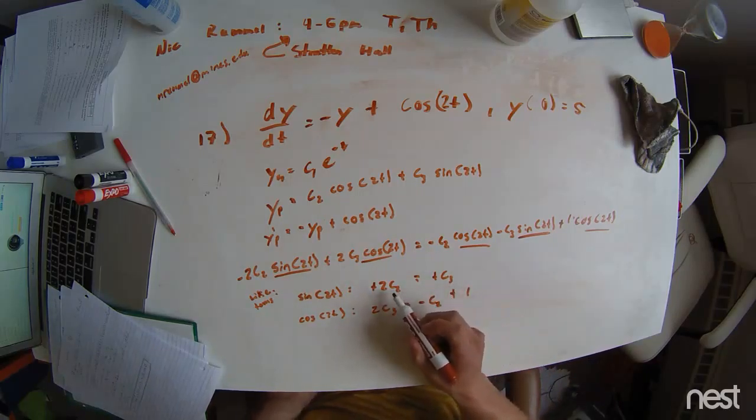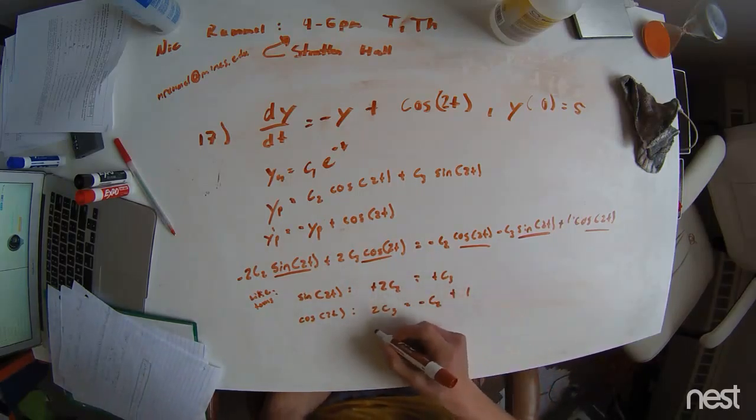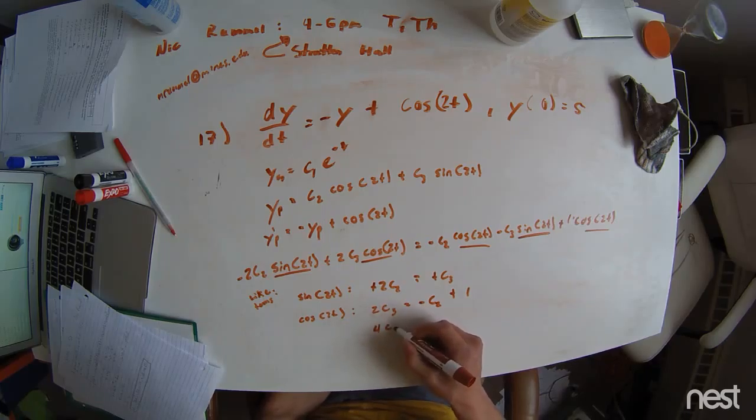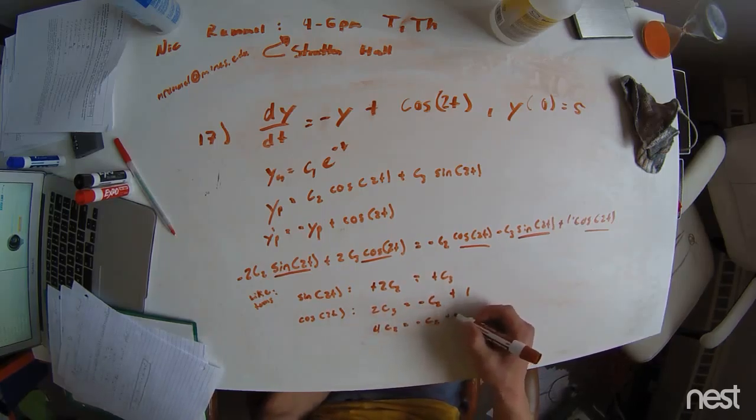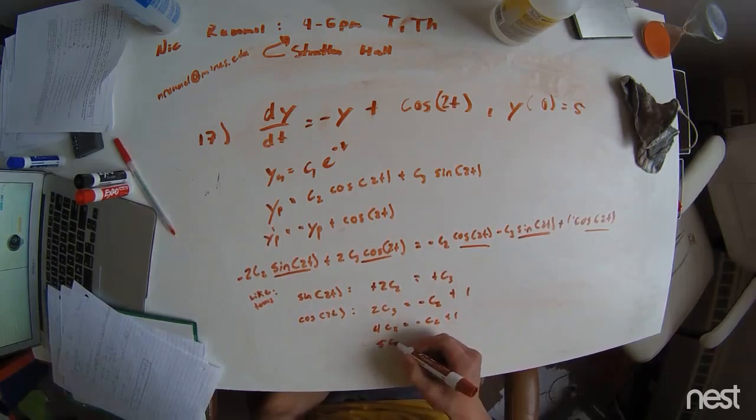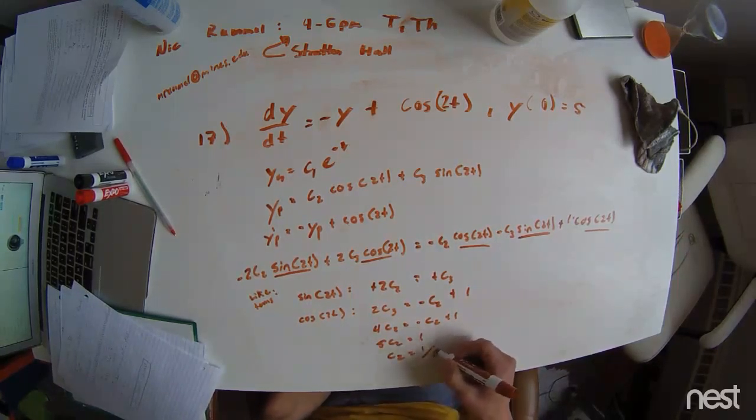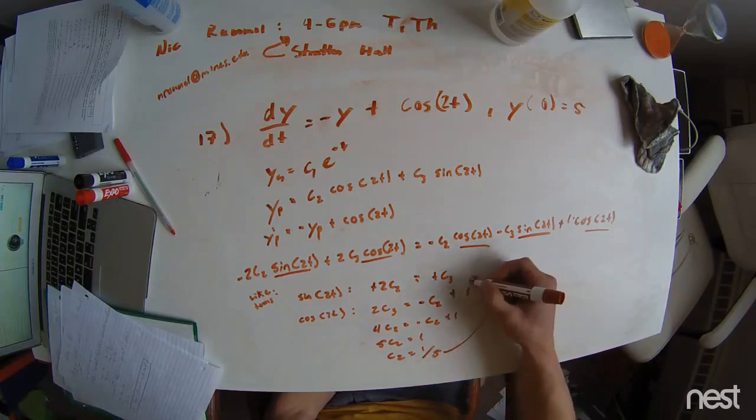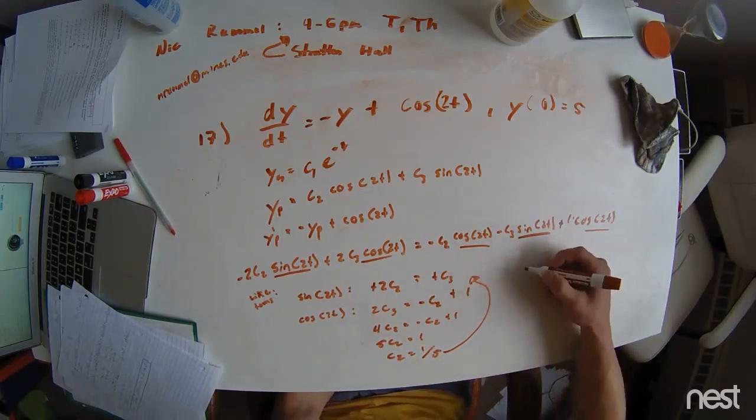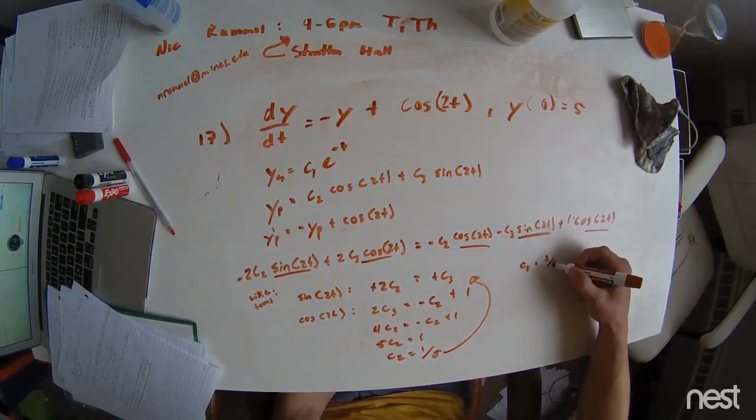We see that c3 equals 2c2. So we can have 4c2 equals negative c2 plus 1. So we get 5c2 equals 1, which means c2 equals 1 fifth. We go back up, and we solve, and we see that c3 equals 2 fifths.